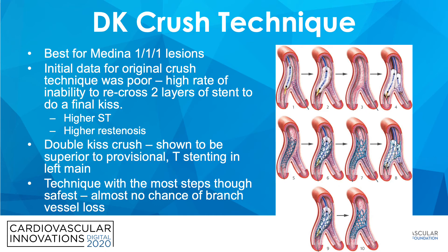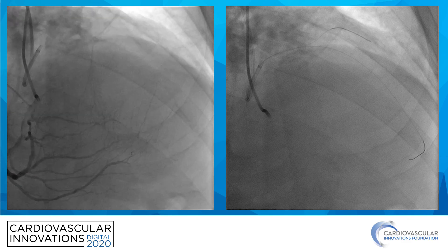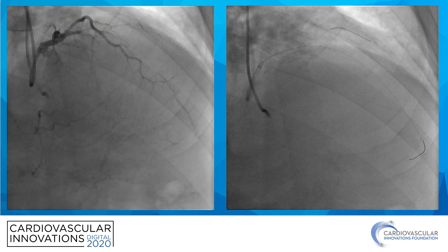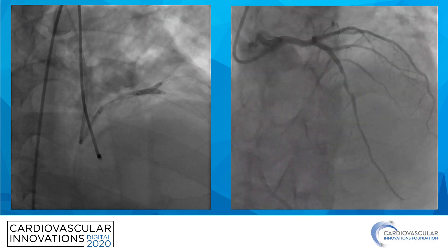The DK crush technique is the best technique for Medina 1,1,1 lesions. Initial data for the original crush technique was poor with higher rates of stent thrombosis and restenosis, likely related to the high rate of inability to recross through two layers of stent struts to complete the final kiss. The double kiss crush technique has shown to be superior to provisional or T stenting in the left main and is the technique with the most steps, though it is the safest with almost no chance of side branch loss. This is a case of a patient with an LAD CTO where we were able to wire antegrade into the LAD and a diagonal branch, perform a DK crush technique, and achieve an excellent angiographic outcome.